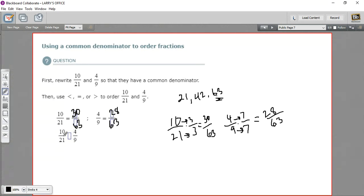And then they want us to use the sign greater than, less than, or equal to. 10 over 21 is 30 63rds. That's larger than the 28 63rds, which is 4 over 9. So I'll put in that greater than symbol. So that is how to use a common denominator to tell which fraction is bigger or smaller.